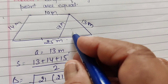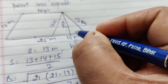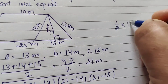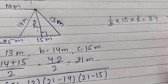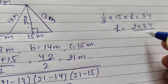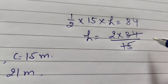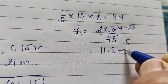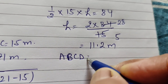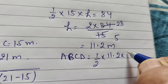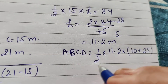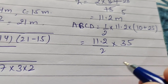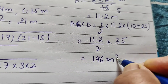The area of the triangle is 84 m square. To find the height: 1 by 2 into base 15 into height equals 84, so height equals (2 into 84) by 15, which gives 168 by 15, equals 11.2 m. Then the area of trapezium equals 1 by 2 into height into sum of parallel sides, which is 1 by 2 into 11.2 into (10 plus 25), giving 196 m square.